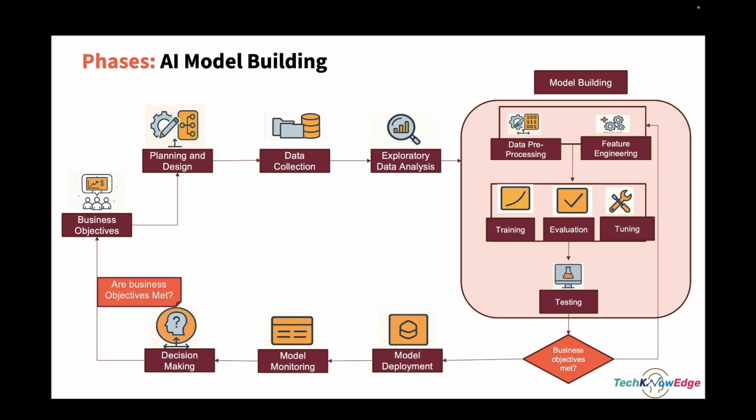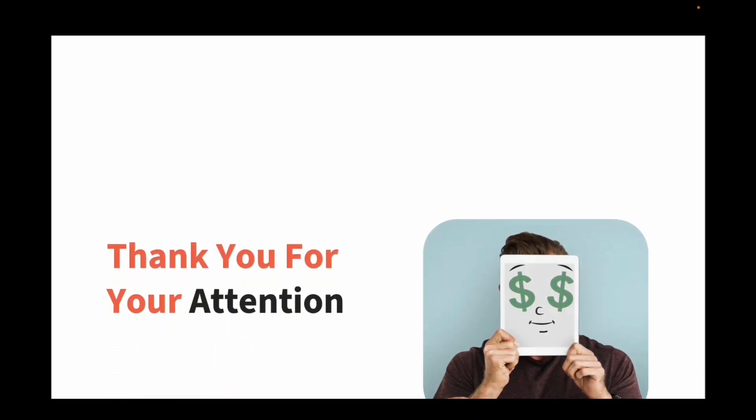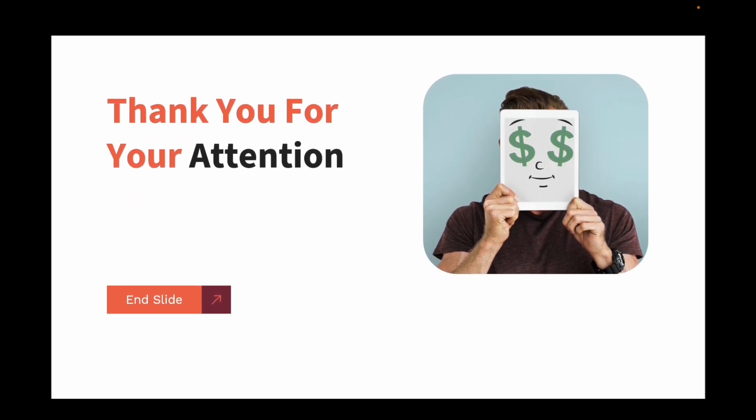So let's wrap up. First, define the objective. Then plan and collect data. Explore the data — that's your EDA. Prepare and engineer your features. Train the model. Evaluate and tune. Deploy and monitor. Every step matters, and skipping one usually comes back to haunt you. If this breakdown helped clarify the AI/ML journey, give this video a thumbs up, subscribe for more hands-on guides, and drop your questions in the comments — I read and reply to everyone. Thanks for watching and I'll see you in the next one. Keep smiling and keep learning.